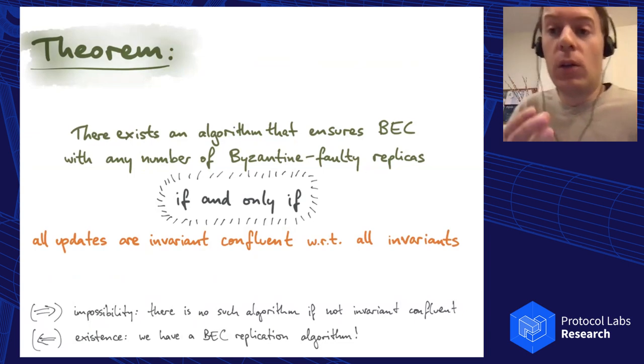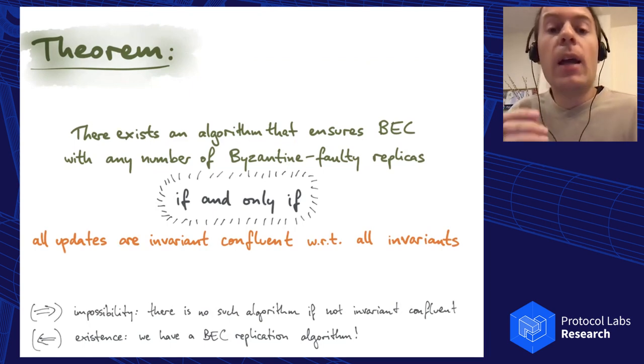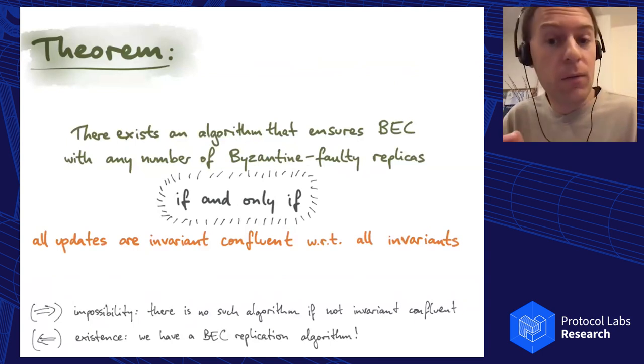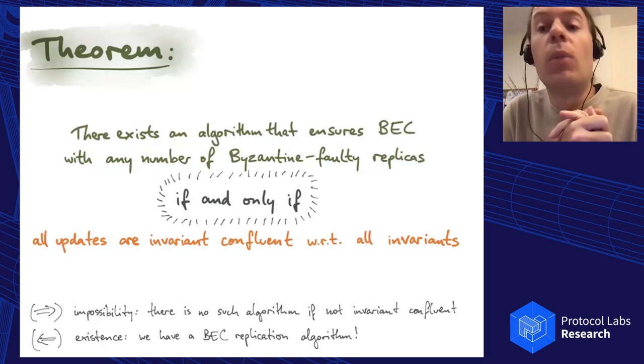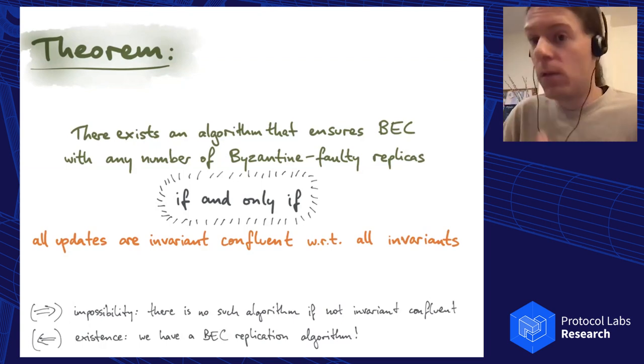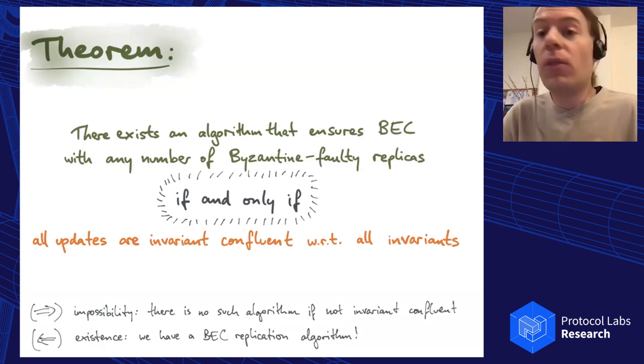What we did is prove now that using this definition of invariant confluence, it's actually possible to ensure Byzantine eventual consistency with an arbitrary number of malicious replicas if and only if all of the updates are invariant confluent with respect to all of the invariants of the system. This now tells you why a cryptocurrency is not amenable to Byzantine eventual consistency—because you have this double spending prevention that you need to do, and that makes it not invariant confluent. But there is a large class of other types of applications that are still useful that are actually invariant confluent, and we can therefore implement them in this model with an arbitrary number of Byzantine faulty replicas. I find it quite exciting.